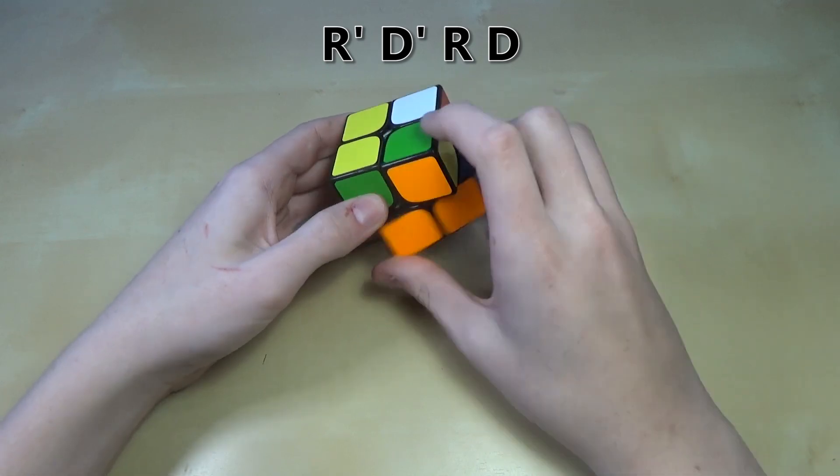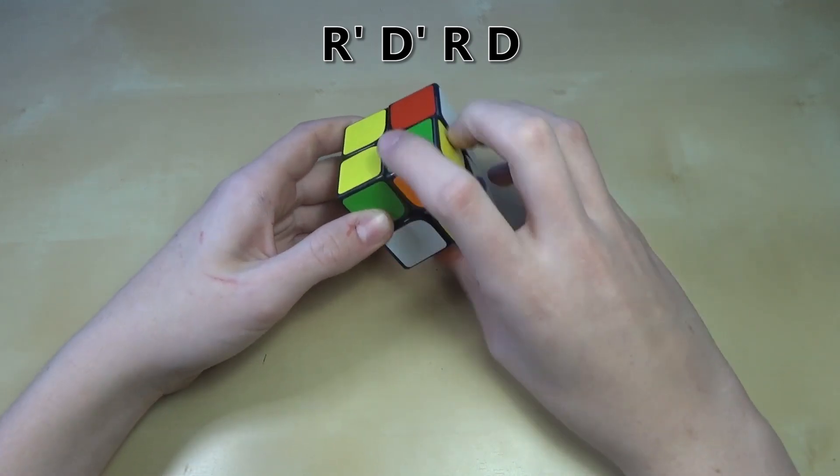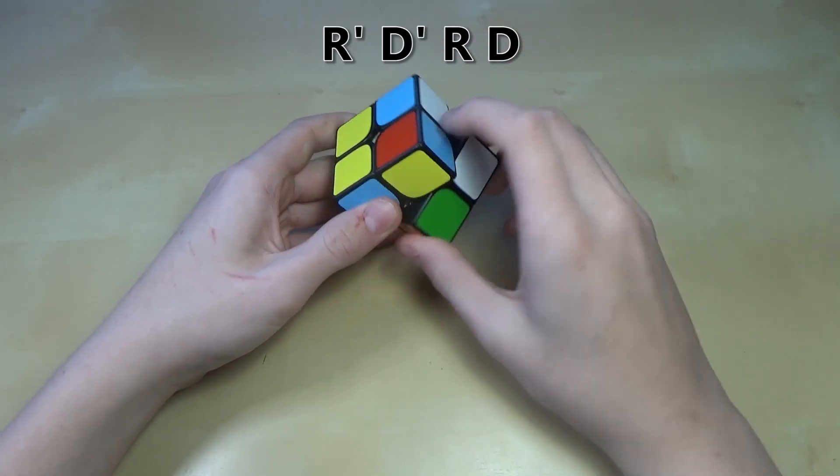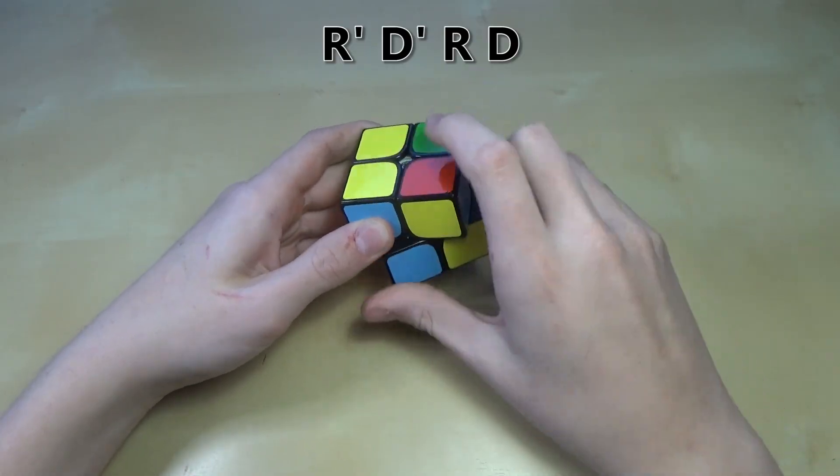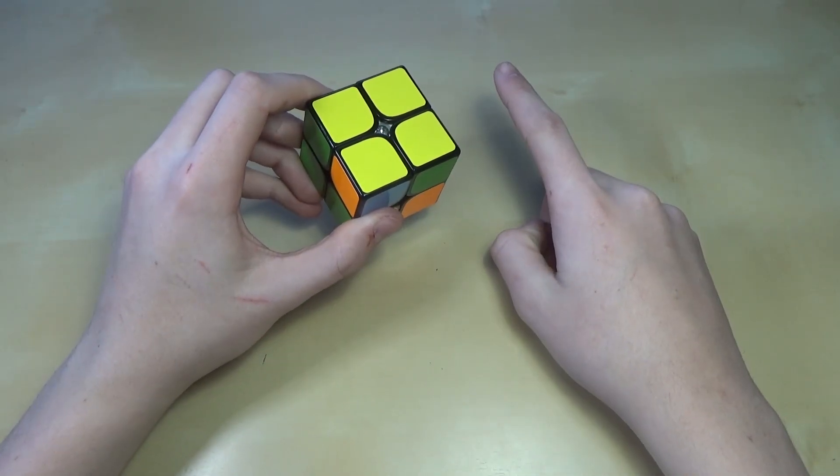Again, pretty familiar concept if you know how to solve a 3x3. If you don't, just do the algorithm over and over again like that, until it lines up like that. Do it a couple times. And there we go. And now we have yellow on top.